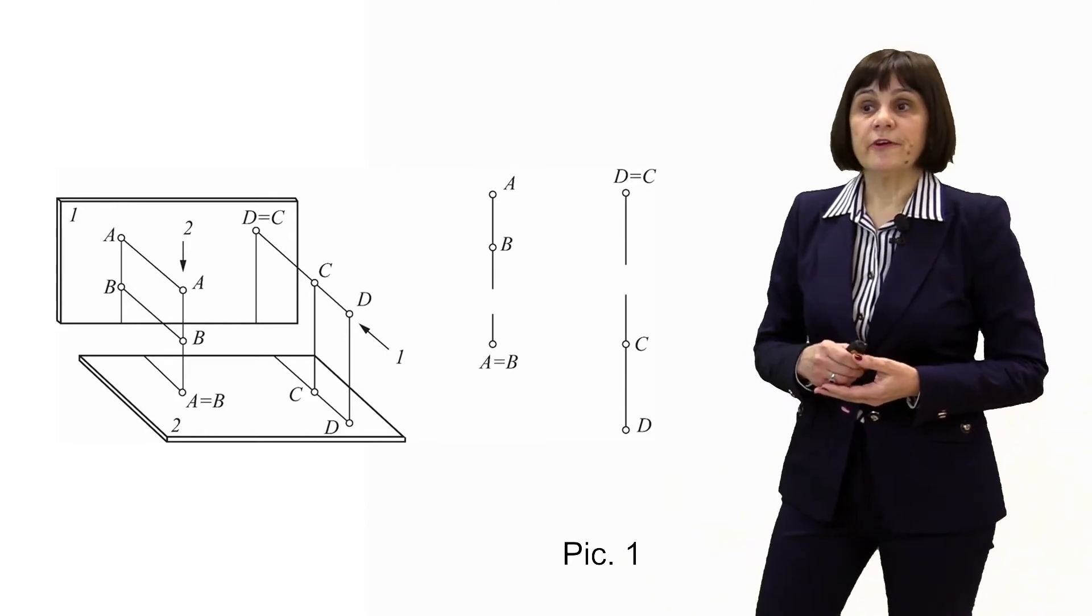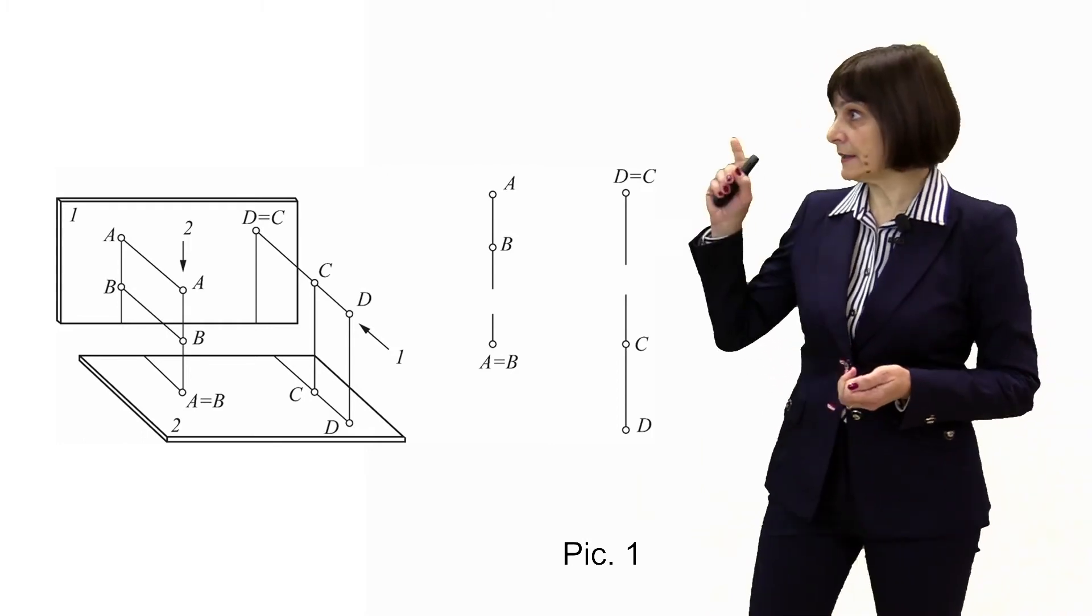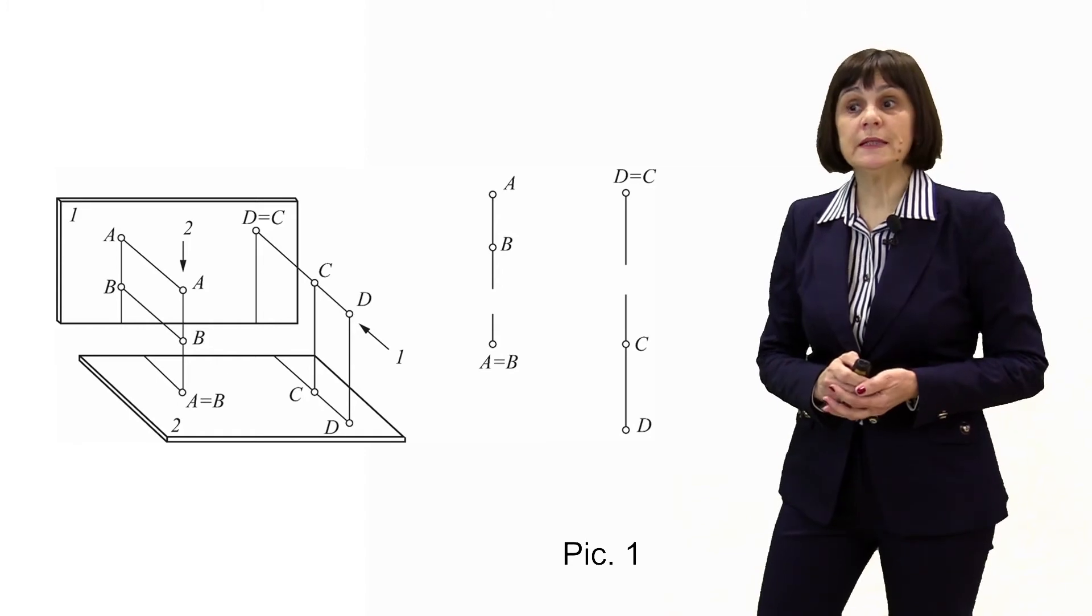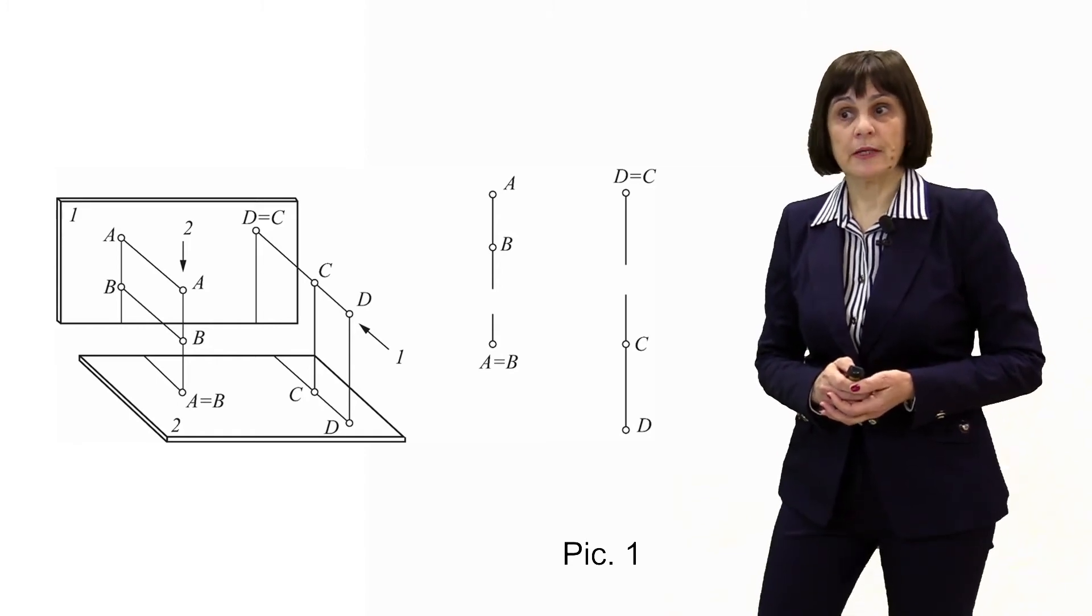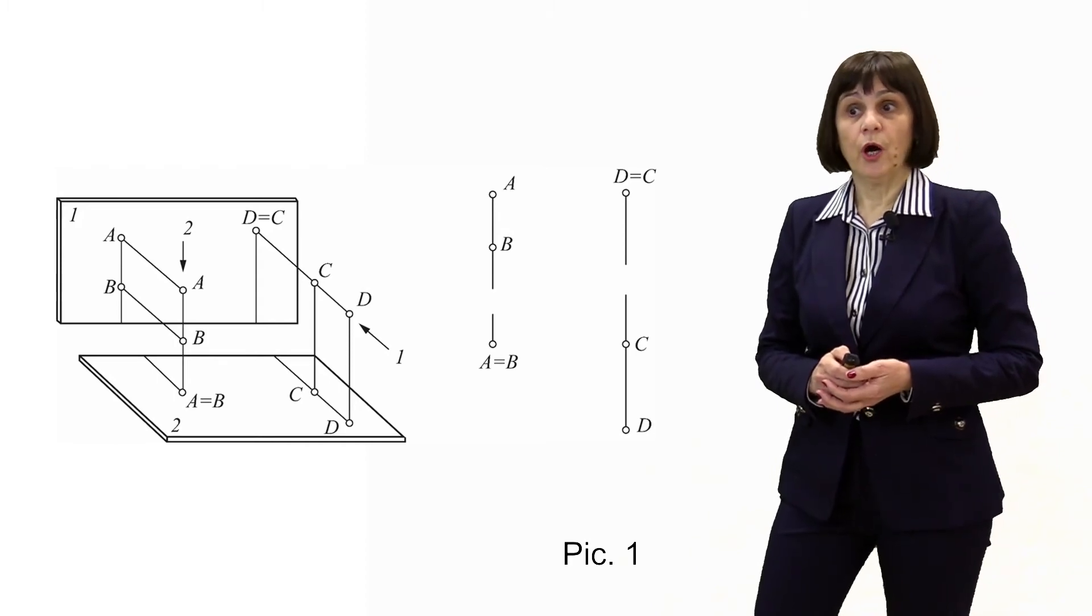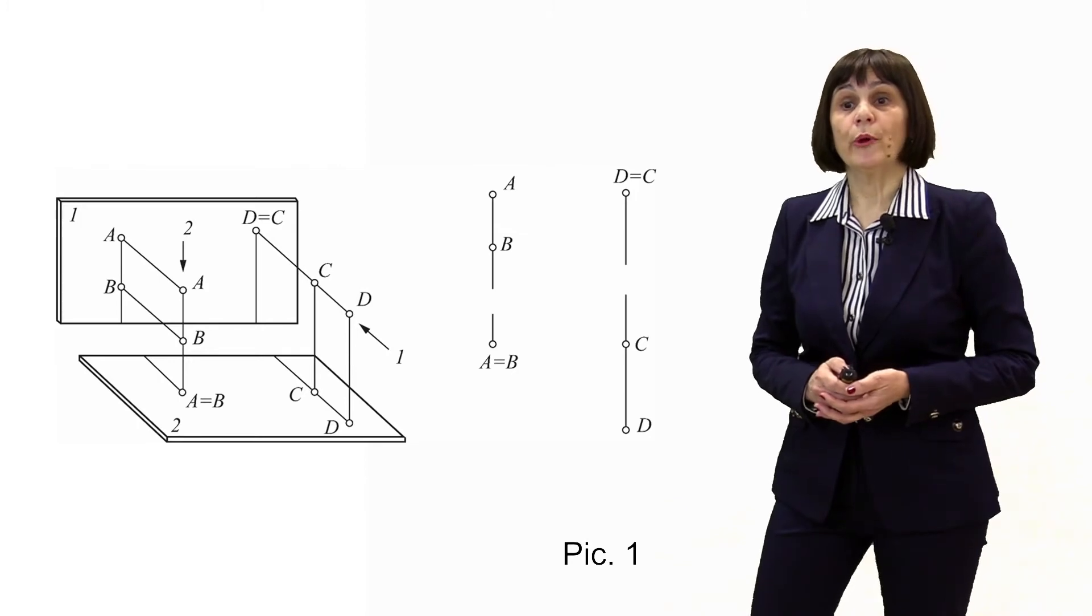In the front view of the two competing points C and D, for this view point D will be visible as it is closer than point C.